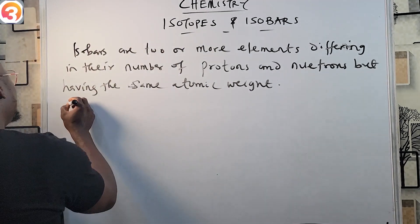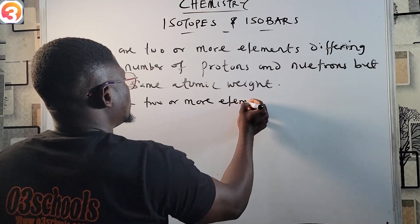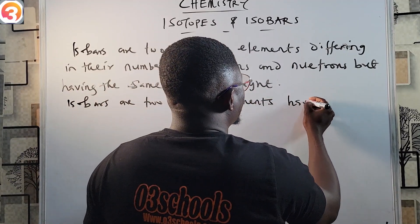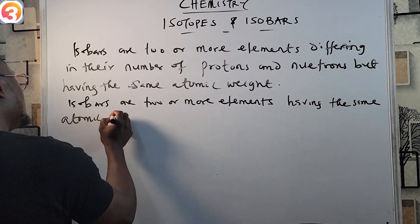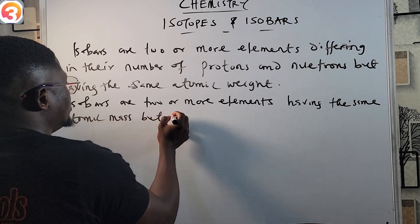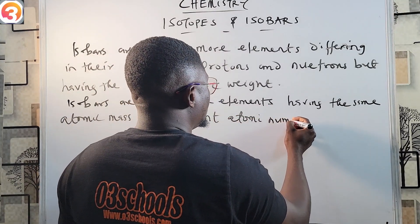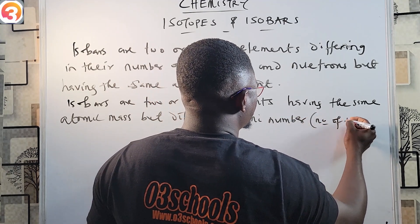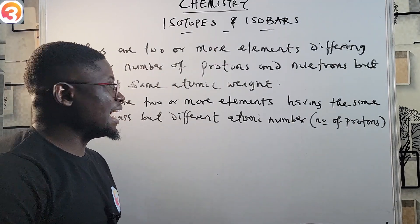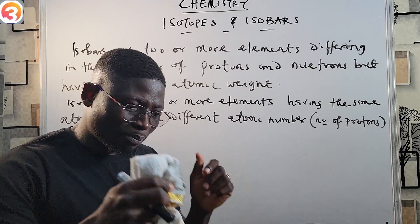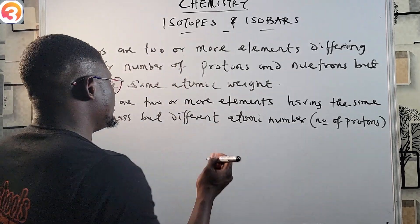Another definition: isobars are two or more elements having the same atomic mass but different atomic number, or different number of protons. A common example is carbon-14: carbon has atomic number 6 and mass number 14, while nitrogen has atomic number 7 and mass number 14.